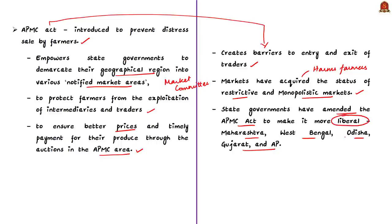In these states, APMC mandis continue to play an important role in providing liberal access to markets for farmers. In order to enhance this access further, the government recently brought in reforms as part of the Atmanirbhar package. One significant reform is the Farming Produce Trade and Commerce Promotion and Facilitation Ordinance 2020, which aims to enable barrier-free trade in agricultural produce. Due to these reforms, farmers will have better price realization in the near future.